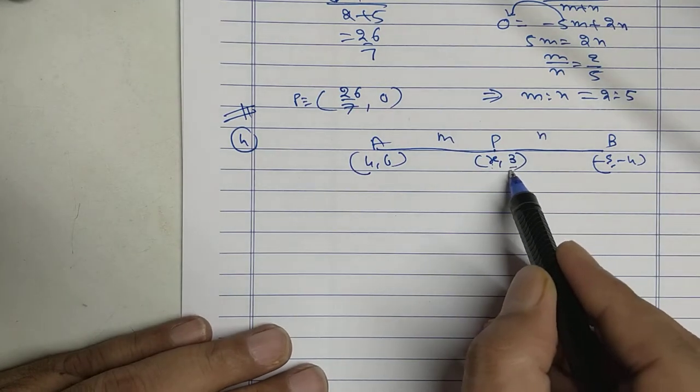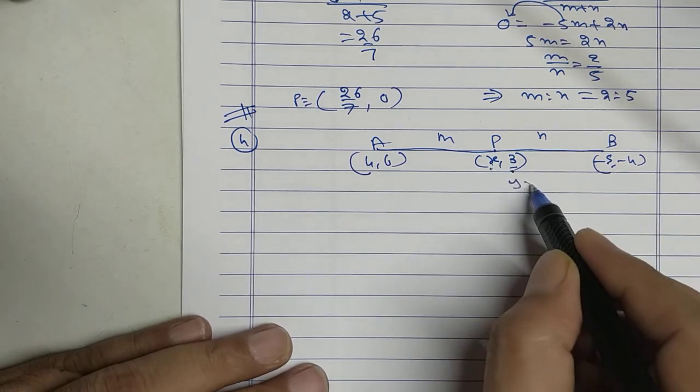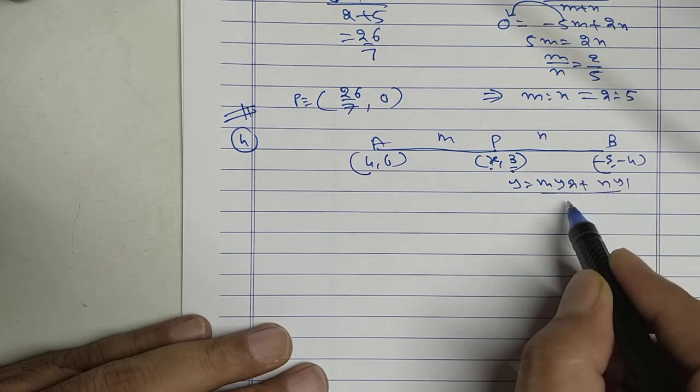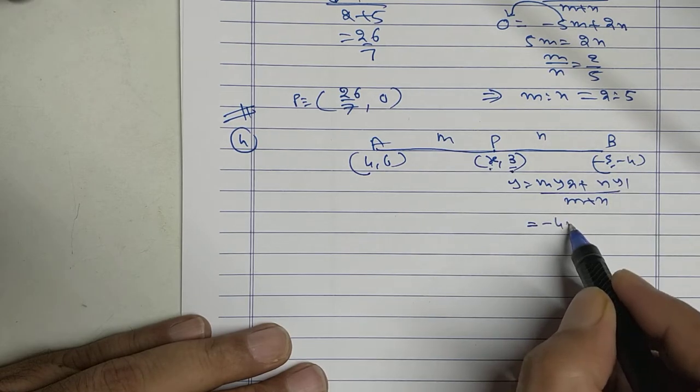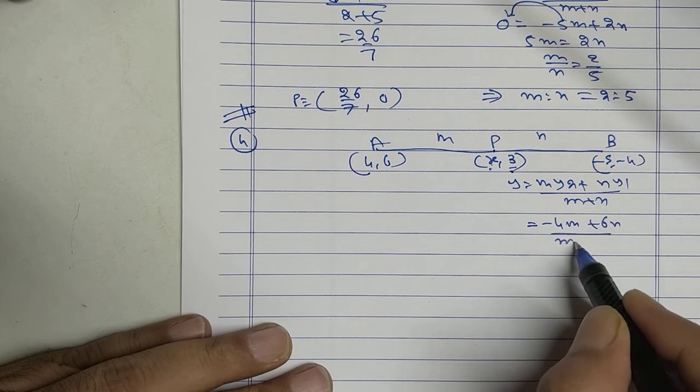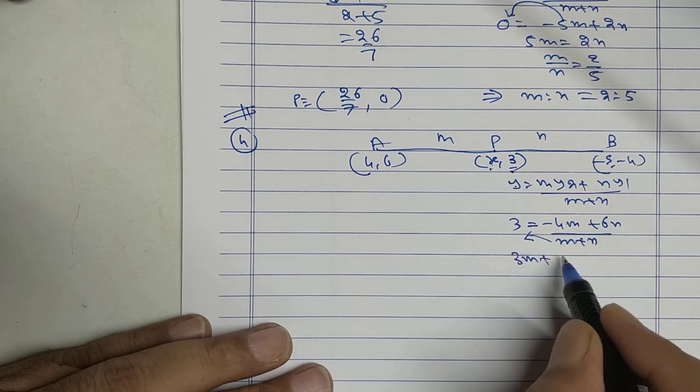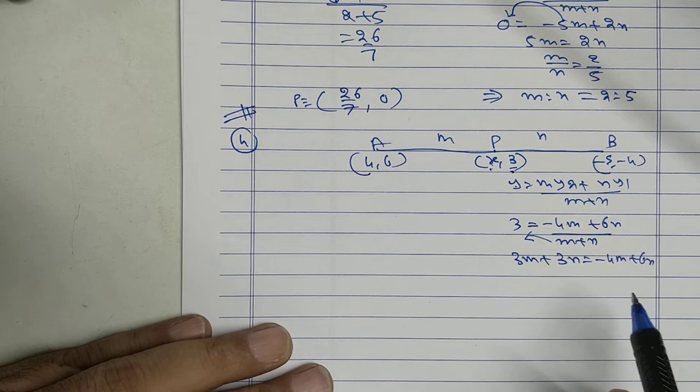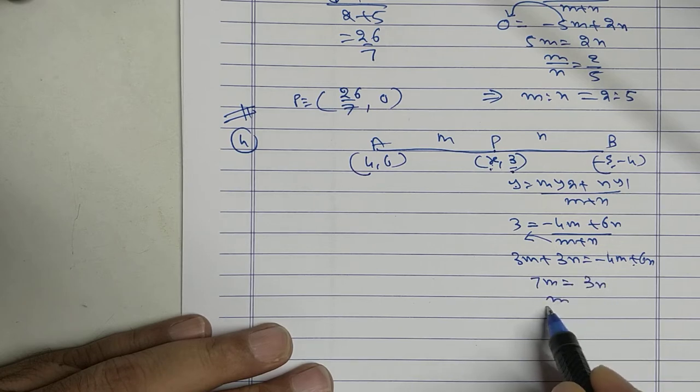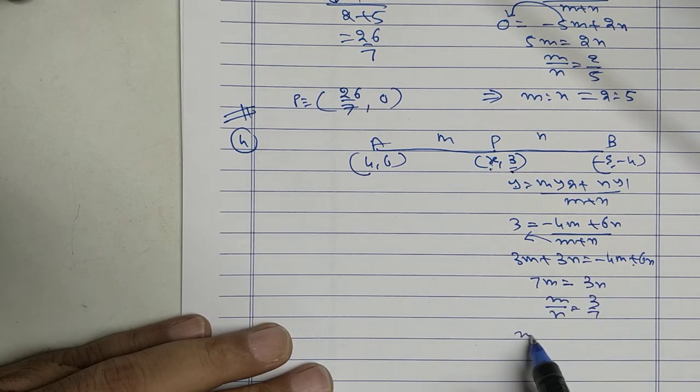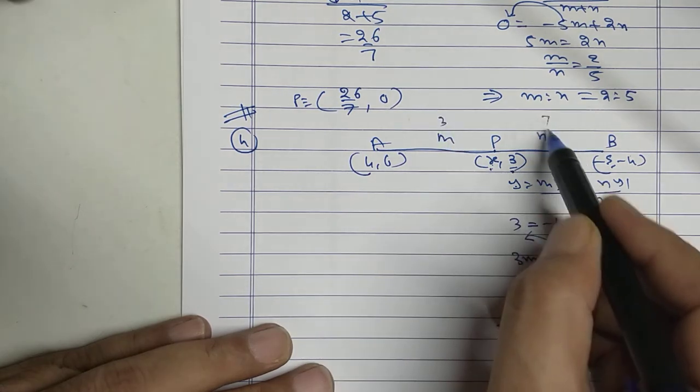Again same way. I will use y value to find the ratio. Once I get the ratio I can find x. Use y equal to m y2 plus n y1 upon m plus n. M into minus 4 minus 4m plus 6n m plus n. And y would already I know 3. Cross multiply. 3m plus 3n equal to minus 4m plus 6n. Bring 4m here. Take 3n there. So 7m equal to 3n. M upon n equal to 3 upon 7. So m is to n is 3 is to 7. I got the ratio 3 and 7.